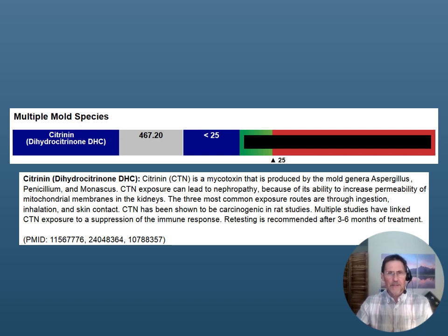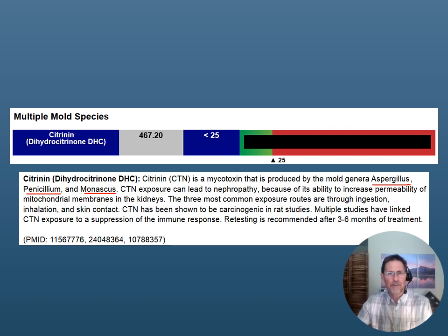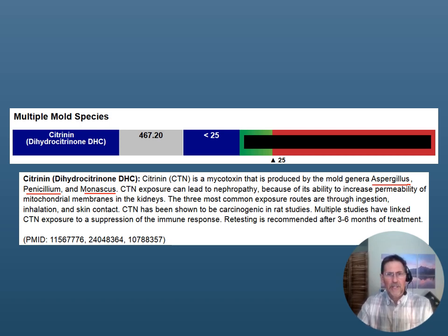The other mycotoxin elevated in this person that could be linked to aspergillus was citrinin. Citrinin can be produced by aspergillus, as well as penicillium and a mold called monascus. Typically when you see citrinin, aspergillus is clearly a common mold we can all be exposed to, and some people claim it's a mycotoxin commonly found in food. But when you start putting more and more of these mycotoxins together, this is more than food exposure — this is clearly environmental exposure. Somebody like this needs to absolutely take seriously what they may be exposed to environmentally in their home, at their office, at school, etc. Citrinin is generally additive with regards to its potential toxicity on top of things like ochratoxin and aflatoxin.